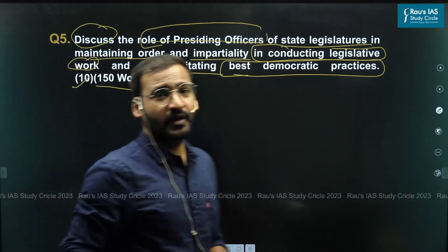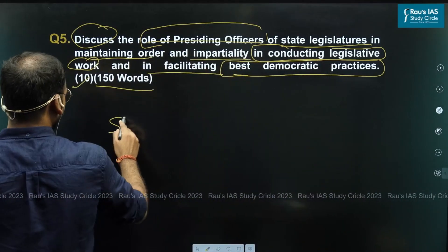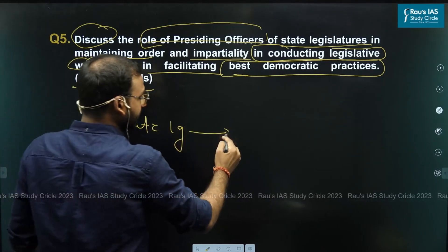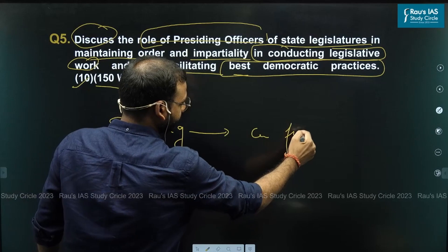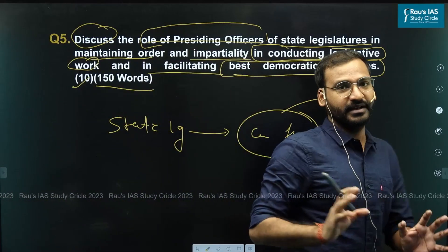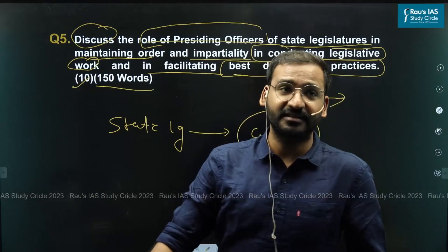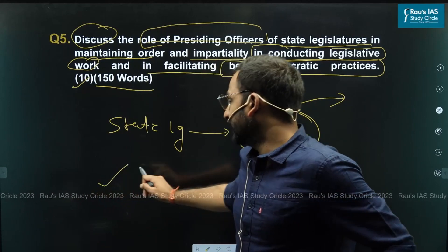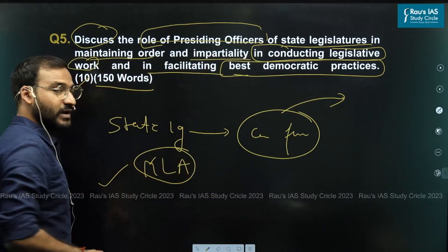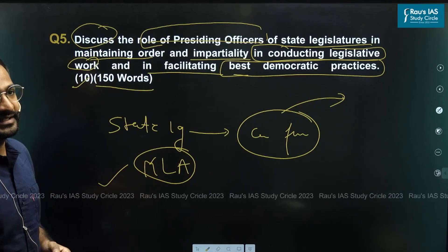So why was this question asked? The question was asked directly from the part of the syllabus where it is written 'state legislature — conduct of business and functioning,' and the role of the presiding officer can be a part of conduct of business. Another possible reason for asking such a question may be due to the recent happening in the Maharashtra legislative assembly, where there was a disqualification of MLAs.